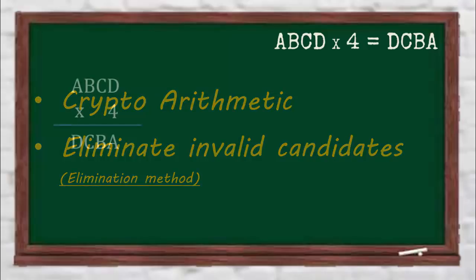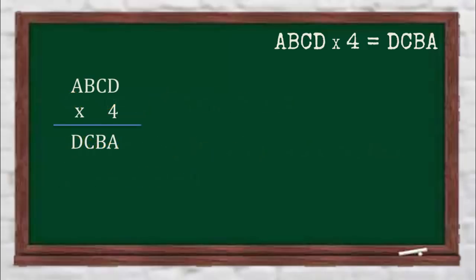We are multiplying a number by an even number, that's 4. So the units place of the output will always be an even number. So we conclude that A is an even number.